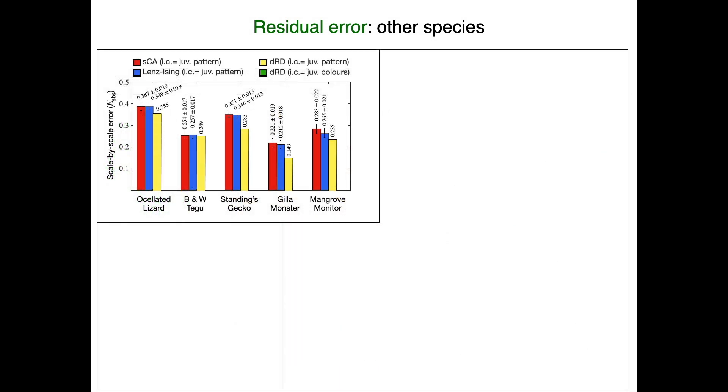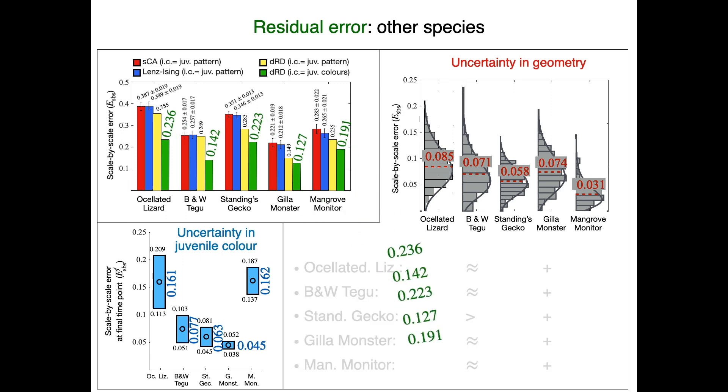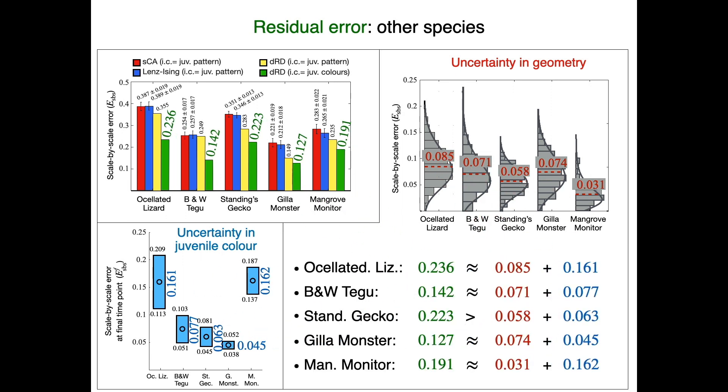Indeed, RD systematically generates a smaller error than stochastic models, and the gain substantially increases when using the juvenile real colors as the initial condition. We then show that in all species, the total of the RD residual error is again explained by a combination of uncertainties in both skin geometry and in juvenile colors.